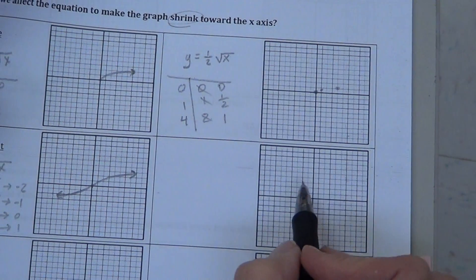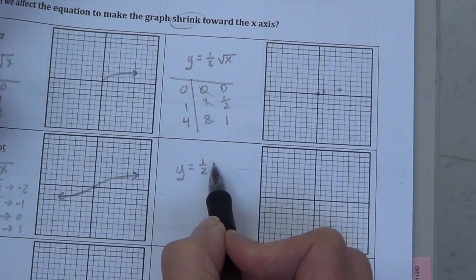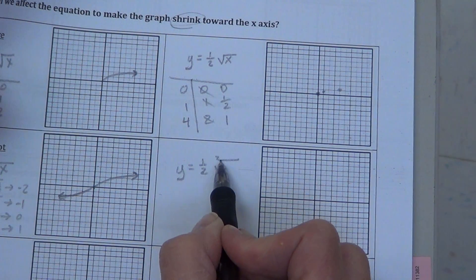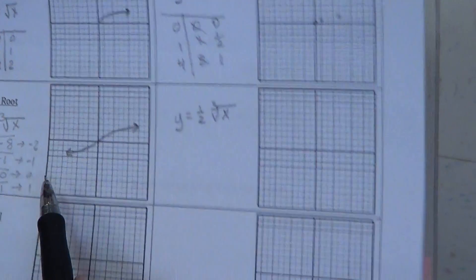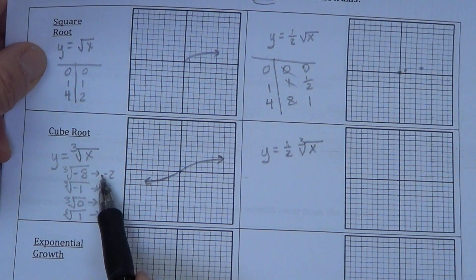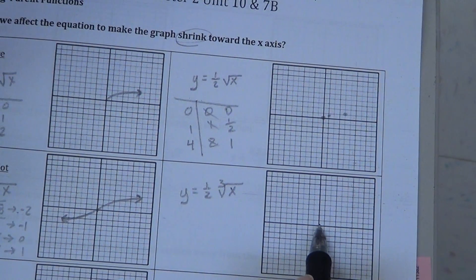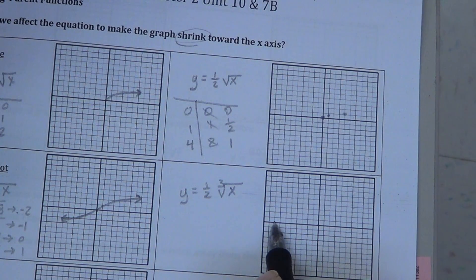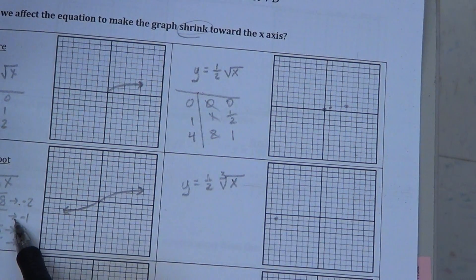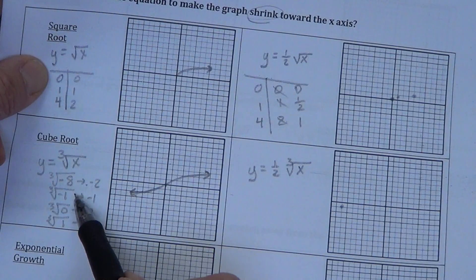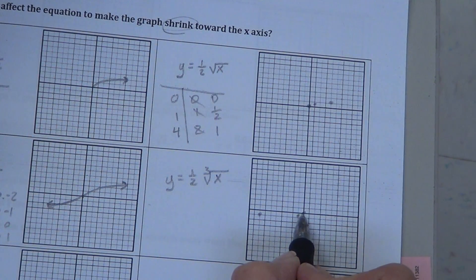So now we come over to this one and we say, well, we want to take the same results as what we had but shrink it by a half. Let's try what worked in our square root function. If we get negative 2 for the cube root of negative 8 and we multiply that by a half, half of 2 is 1, so it would become negative 1. So way out here at negative 8, we're at negative 1 instead of negative 2. And at negative 1, half of negative 1 would be negative one half, half of 0 just like in the square root. We can't get any closer than 0.